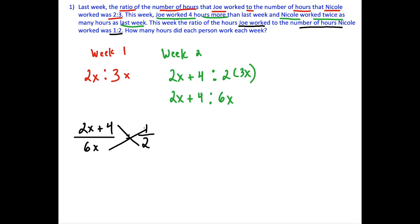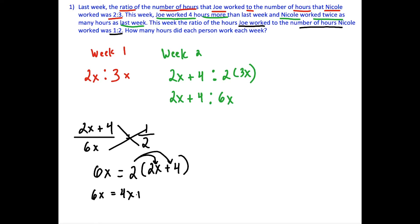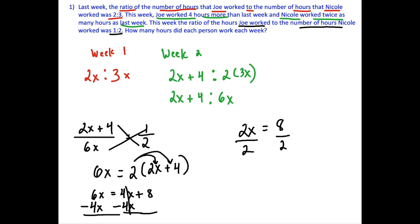To solve, we cross multiply: 6x times 1 is 6x, and this is equal to 2 times (2x plus 4), which we need to put in parentheses because we need to distribute. Working this out, we have 6x equals 4x plus 8. We subtract 4x on both sides, giving us 2x equals 8. Divide both sides by 2, and x equals 4.